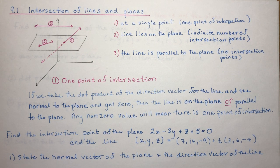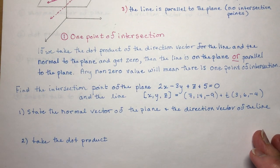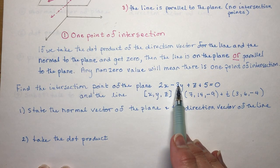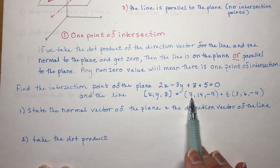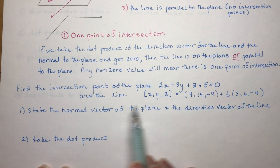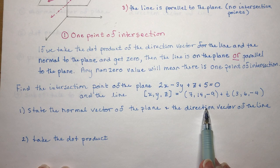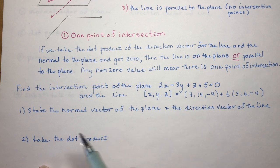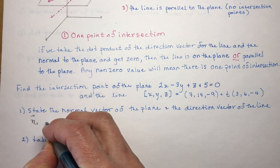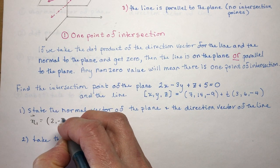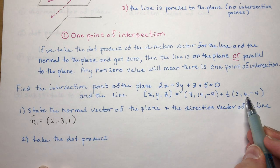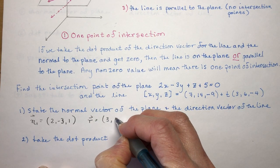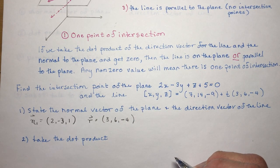Let's look at each of these three examples. For the first question — one point of intersection — we find the intersection point of the plane and the given line. I'll start by finding the normal vector of the plane and the direction vector of the line. The normal vector is just the coefficients a, b, c: so the normal vector is (2, -3, -3, 1) — wait, it's (2, -3, -3) — and the direction vector from the line is (3, 6, -4). I write those down and take the dot product.